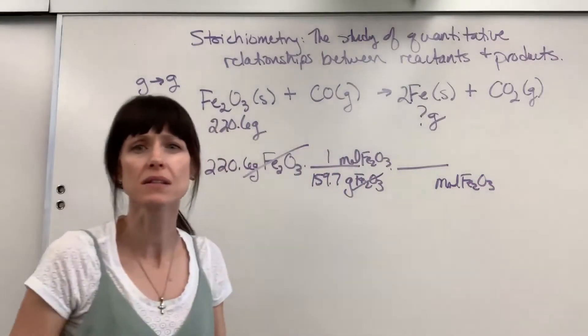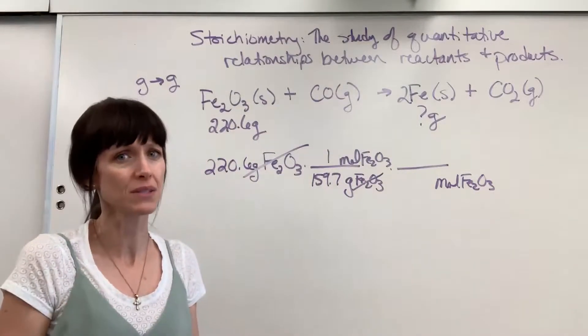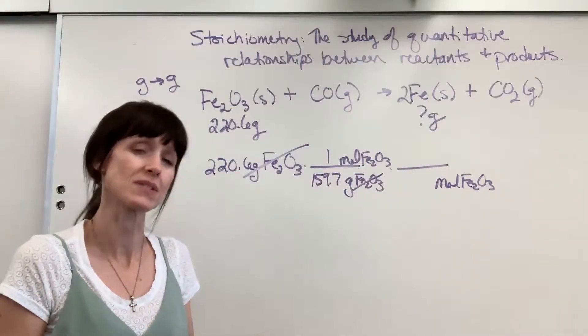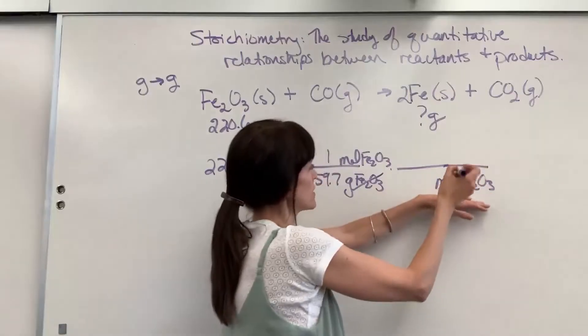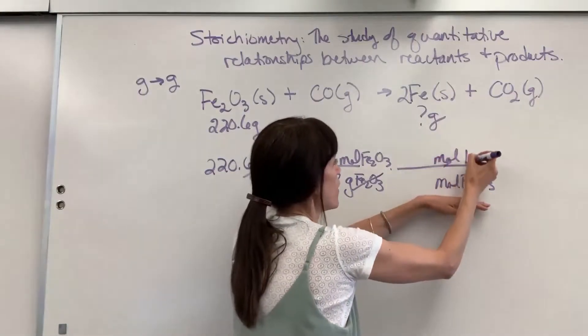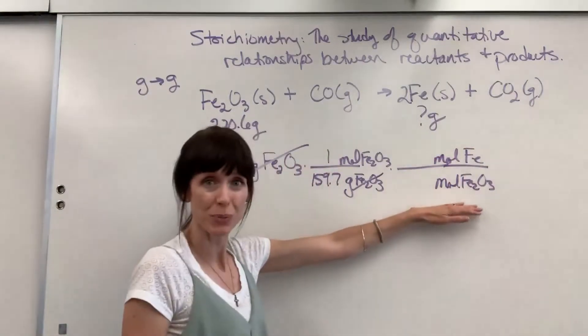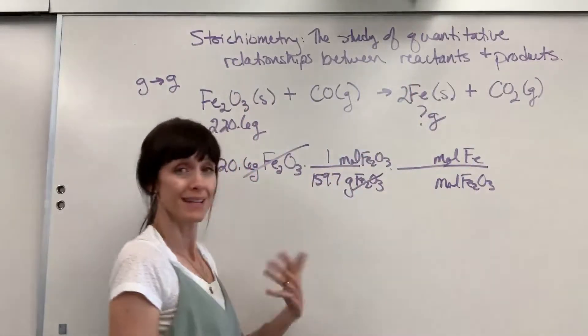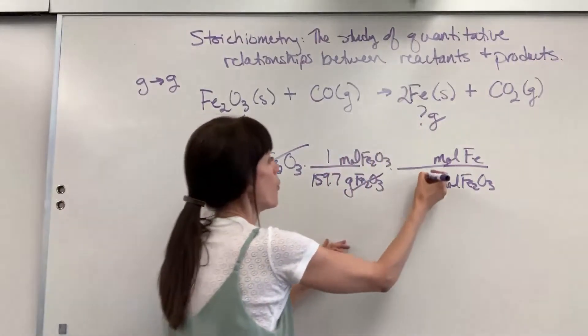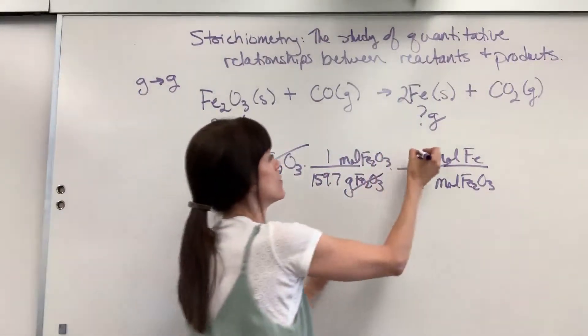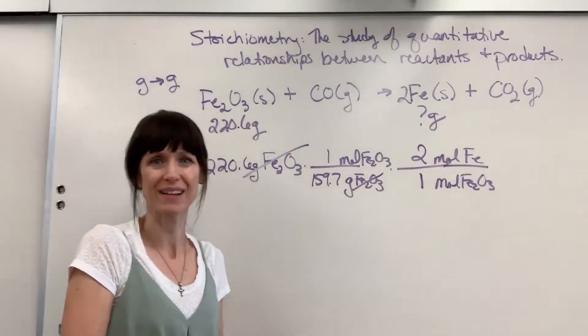Notice how I'm constantly looking at units, and I write the units down first, then I add the numbers. I attach the appropriate numbers. So moles of iron 3 oxide, but I want moles of iron. There's our bridge walking from one compound to another one. Now we can attach the numbers. You just look at the coefficients. One mole iron 3 oxide produces two moles of iron.